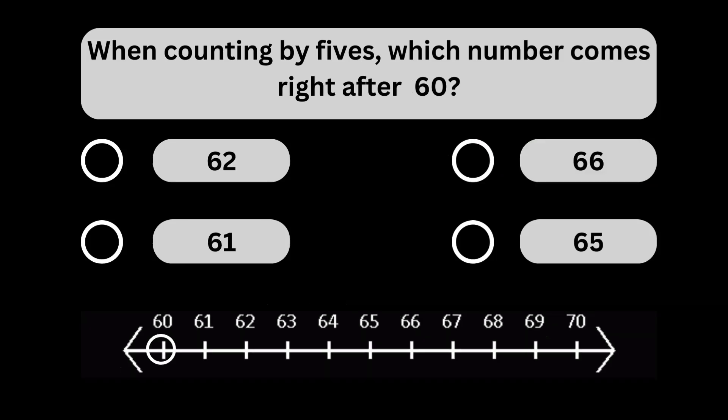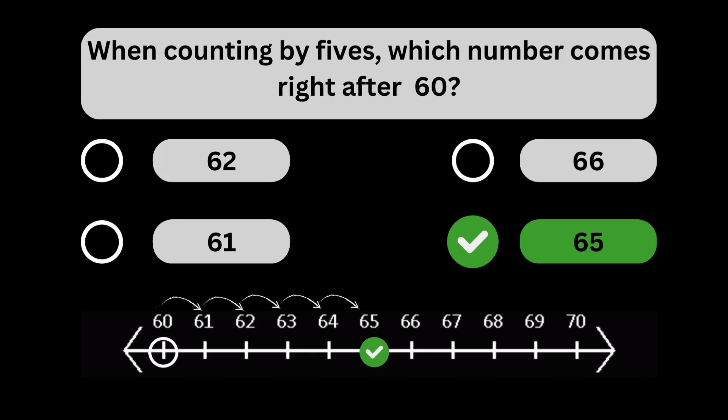When counting by fives, which number comes right after 60? When counting by fives, the number 65 comes right after 60.